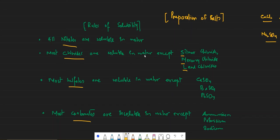Most chlorides are soluble except silver chloride, mercury chloride, and lead chloride — remember them as small, medium, large (S, M, L). Most sulfates are soluble except calcium sulfate, barium sulfate, and lead sulfate — remember them as CaSO4, BaSO4, and PbSO4.